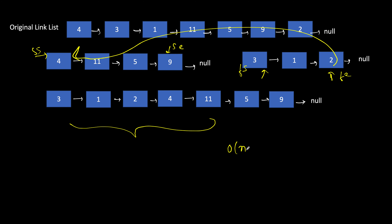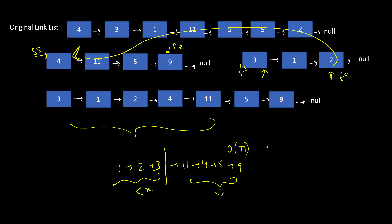We then point the end of the first linked list to the start of the second linked list to get the final merged list. The time complexity of this solution is O(n), where n is the number of elements in the linked list, because we iterate the list only once and just modify a few pointers. Note that we assumed the relative order of elements doesn't matter, so a valid output like 1, 2, 3, 11, 4, 5, 9 is acceptable.